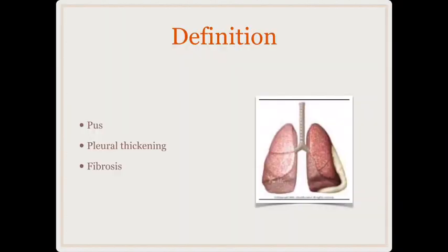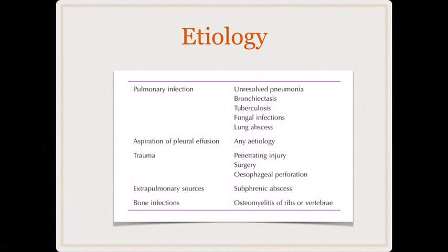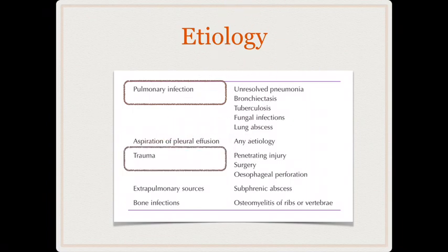Empyema is a collection of pus within a thickened pleural cavity along with fibrosis. Three components are required for diagnosis: presence of pus, pleural thickening, and fibrosis. If there is only pus with no pleural thickening and fibrosis, that condition is known as pyothorax. The commonest cause of empyema is residual pulmonary infection, and the second most common cause is trauma.